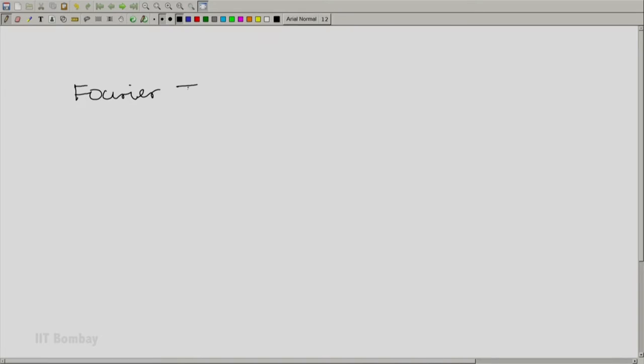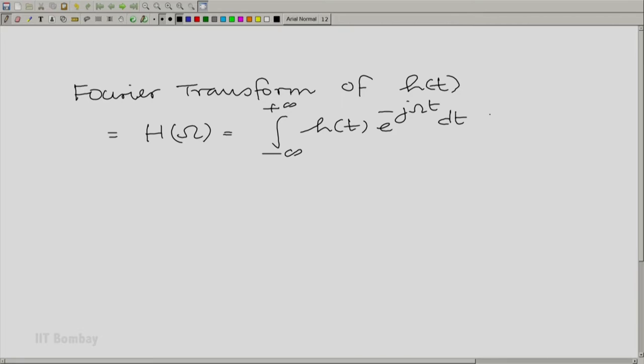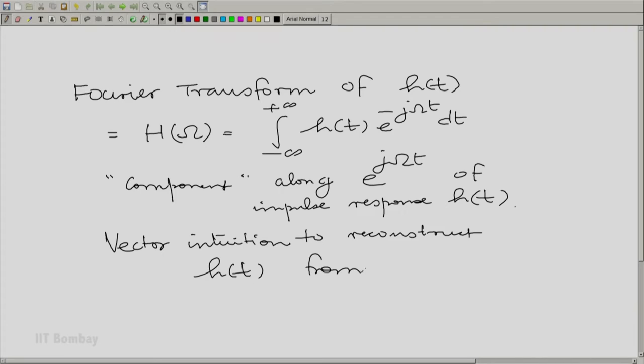Let us look at the details here. We said the Fourier transform of the impulse response h(t) was described by capital H(ω) given by the integral from minus to plus infinity h(t) e raised to the power minus jωt dt, and we thought of this as a component along e raised to the power jωt of the impulse response h(t). We were asking can we use vector intuition to reconstruct h(t) from H(ω), and we expect essentially that you would have to do a sum replaced by an integral.